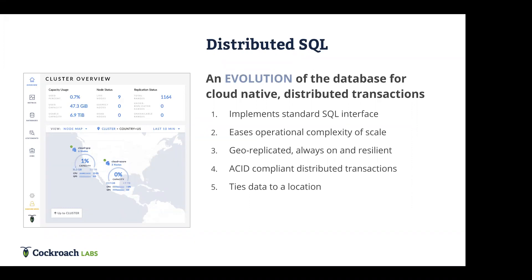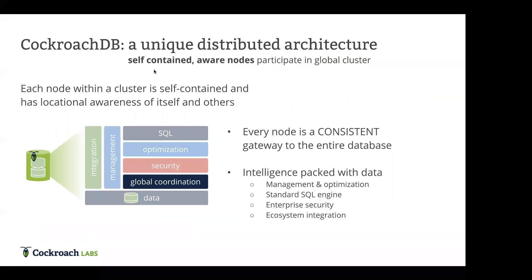Being able to tie data at the row level to a particular location is a requirement for distributed SQL. Anyone can do two regions, but start doing three or four and latencies become a big problem. Combating the speed of light is something really critical here at CockroachDB. So before we get into how to get started with CockroachDB, I wanted to give you the core requirements we're working toward and a sense of the architecture itself.